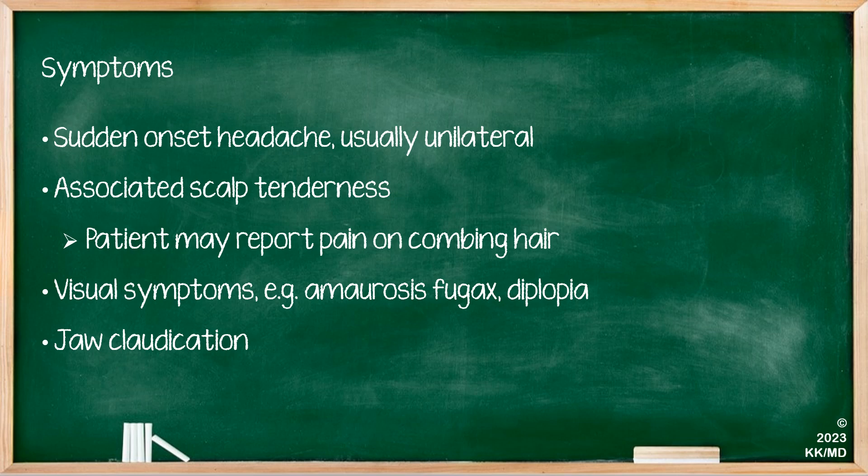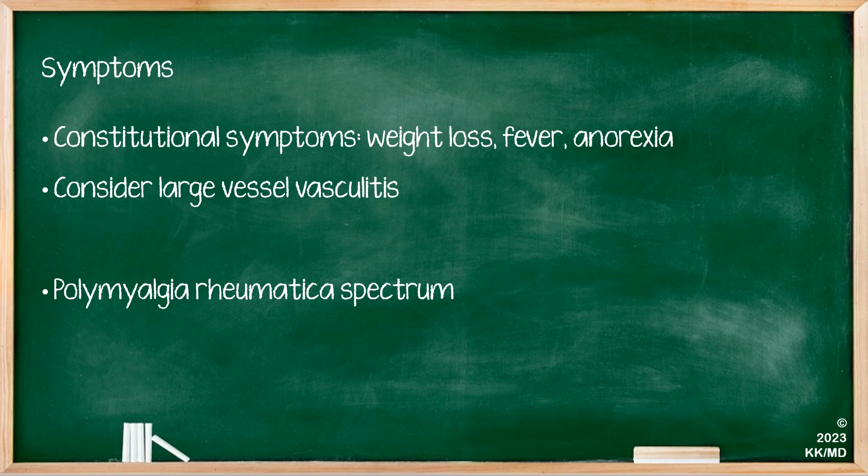GCA can not infrequently cause visual impairment, typically presenting as amaurosis fugax or diplopia. Another key feature is jaw claudication and pain on chewing. It can also present with constitutional symptoms such as weight loss, fever, and anorexia. In those circumstances, it is important to consider other causes of large vessel vasculitis. In a future lecture, we will discuss polymyalgia rheumatica (PMR), which is known as a spectrum of GCA.